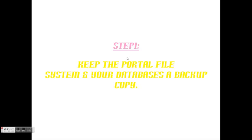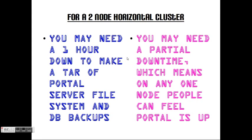Step 1: Keep the portal file system and your database system with a backup copy. For a 2-node horizontal cluster, you may need 1 hour of complete downtime to take the portal server file system and DB backups. You may need only a partial downtime, meaning on one node the portal stays up while you take another node down and install the fix pack.